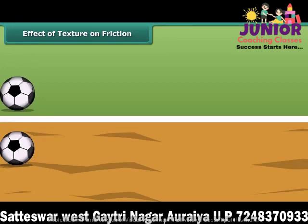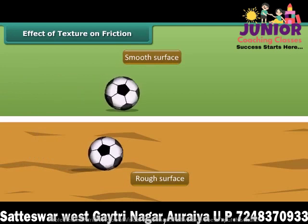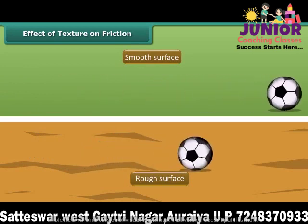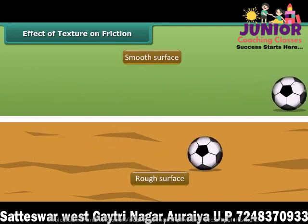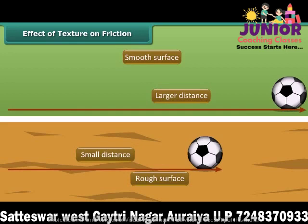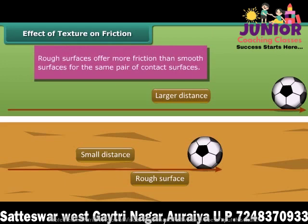In this figure, a ball is rolled on a smooth surface and another similar ball on a rough surface. Both balls start rolling on different surfaces with the same speed, same force, and at the same time. But the ball rolling on the smooth surface travels a larger distance than the ball rolling on the rough surface. This shows that rough surfaces offer more friction than smooth surfaces, proving that friction depends on the texture of contact surfaces.